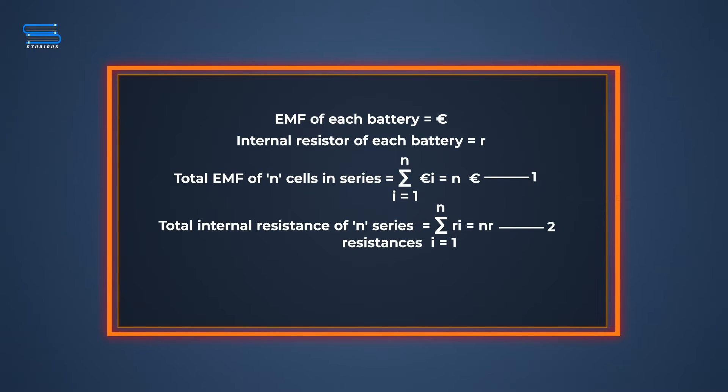The total internal resistance of n series resistances will be the sum of all resistances, which would be n times r. Consider this as equation 2.